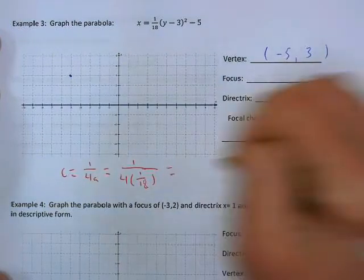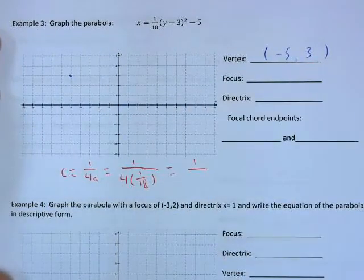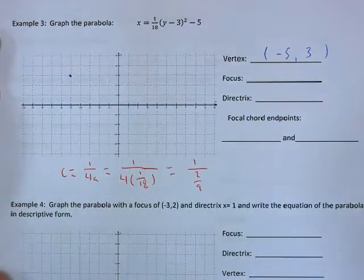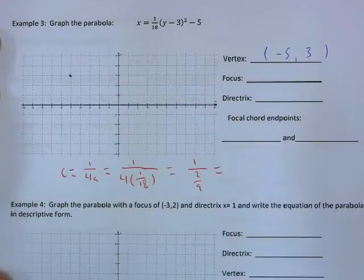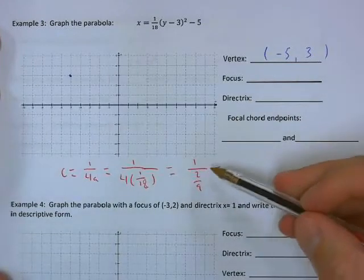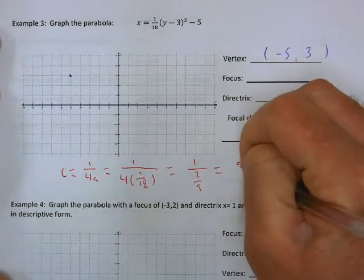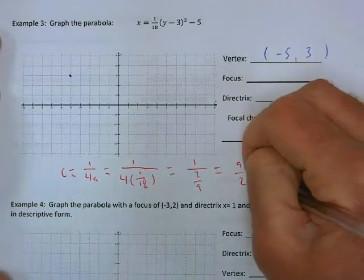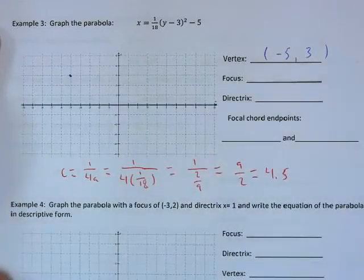c = 1/(4 × 1/18) = 1/(4/18) = 1/(2/9). One divided by 2/9 is the same as 1 times 9/2, which gives 9/2. As a decimal that's 4.5. So our focal length is 4.5 — not always a whole number, but we can work with that.